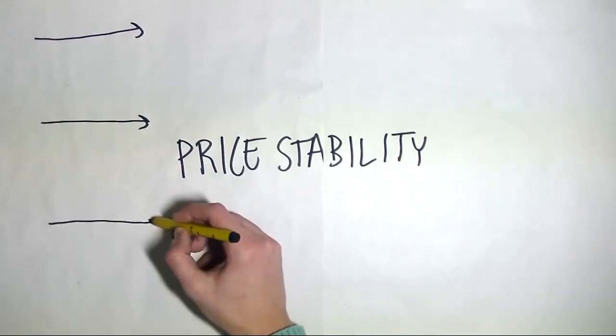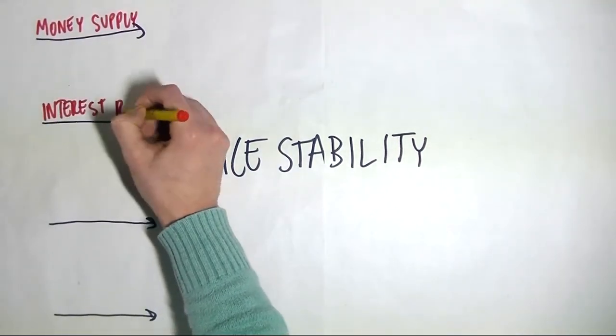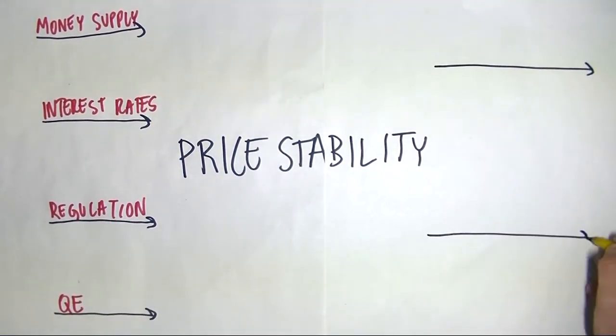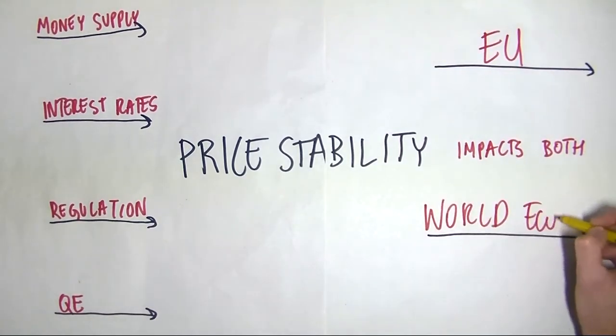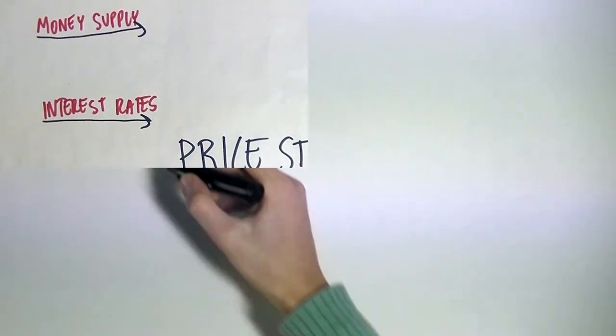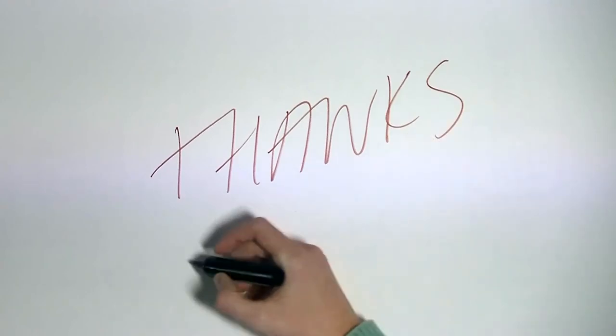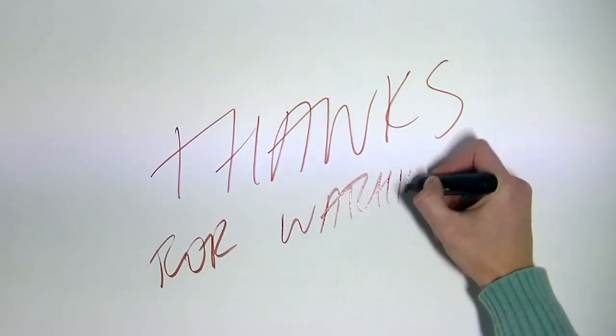It is now easy to see that price stability is an incredibly complex issue. It is influenced by many factors and in turn affects the whole market. Therefore, the ECB has an undeniably important role, with far-reaching consequences on both the European and the world economy.